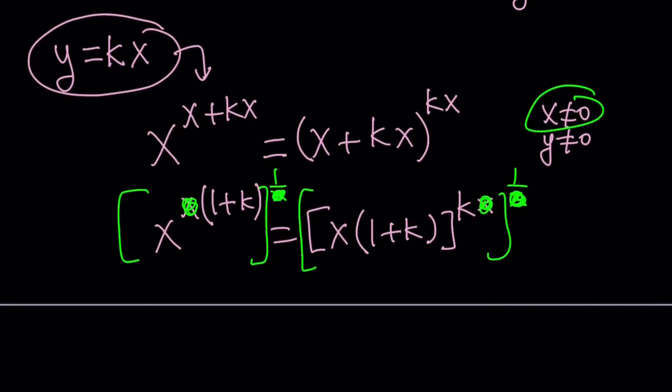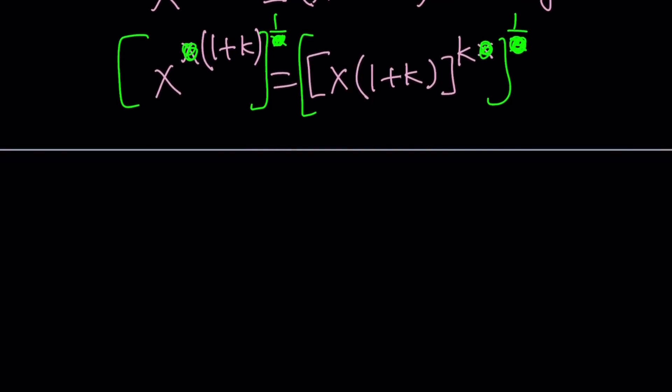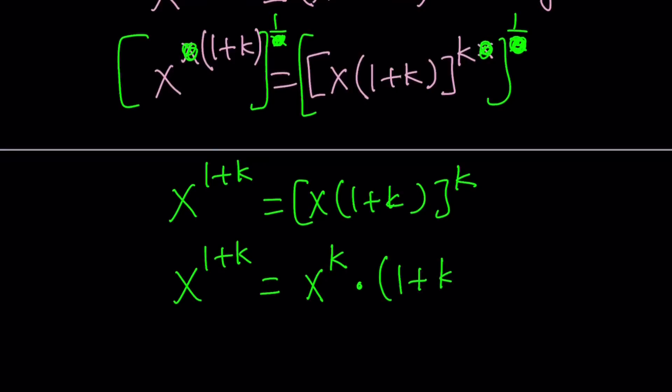Since x does not equal zero I can do this. Now we got a simpler form which is x to the power one plus k equals x times one plus k to the power k. Now you're raising a product to the power k so you're going to raise every factor to the power k, so it's going to be x to the k times one plus k to the power k.